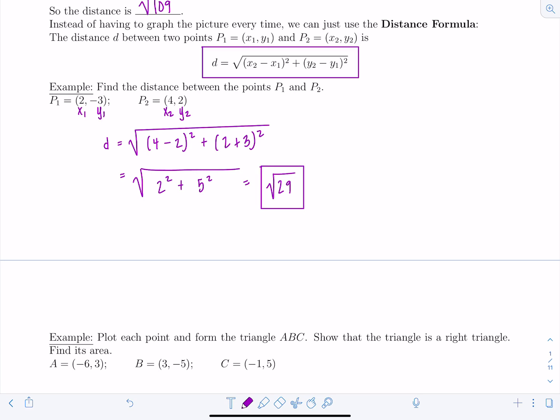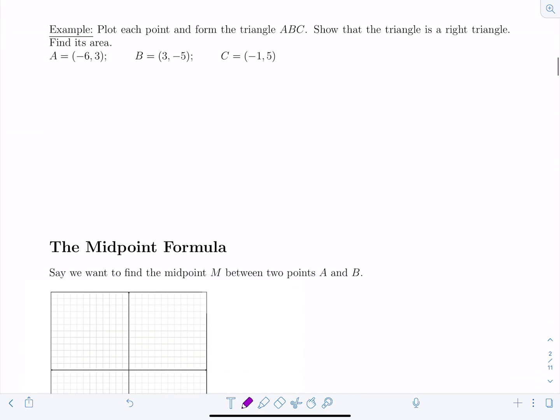All right, let's look at another example. Here it says plot each point and form the triangle ABC, and then show that the triangle is a right triangle. Find its area. Okay, so one thing at a time. Let's just plot the points, form the triangle, look at the points so you decide how to scale everything. So I have to go to -6 in the x direction, -5 in the y direction, positive 5 in the y direction.